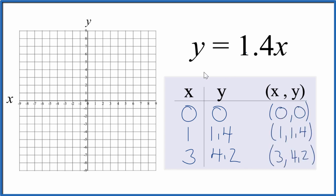So these are the points we'll graph for the equation y equals 1.4x. So we go x is 0, y is 0 right there at the origin. x is 1, and y is 1.4. So 1 and 1.4 right about there.